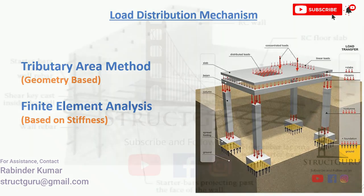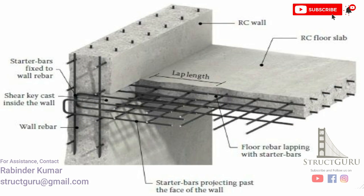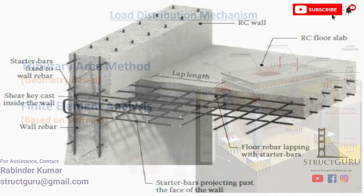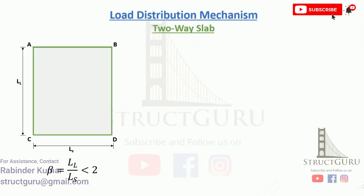Similarly, beams are connected to columns and shear walls which have extremely high axial stiffness compared to the beams, so the load is transferred from these vertical members to the base of the structure. Now let's understand how the load is transferred using the tributary area method.